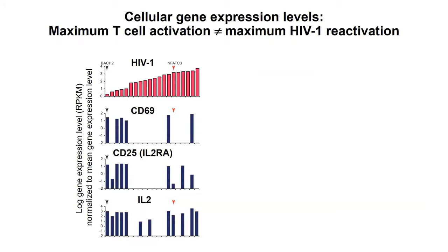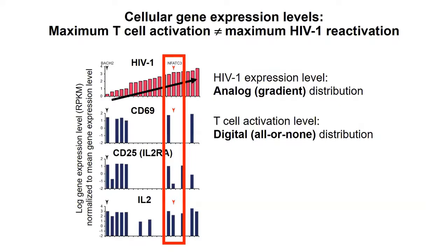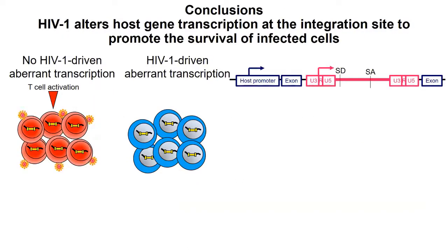When we look at these 20 single cells, we found that the HIV RNA level follows an analog or gradient distribution — you can grade them from lower to higher. However, when you look at T cell activation level, T cell activation follows a digital or on/off phenotype, as known from Mark Davis's work, where you need to meet a certain threshold to turn it on or off. So in a cell with a lot of HIV being produced that's integrated into NFAT, it somehow interacts with the NFAT pathway and down-regulates T cell activation. We feel this could be the way HIV down-regulates immune recognition.